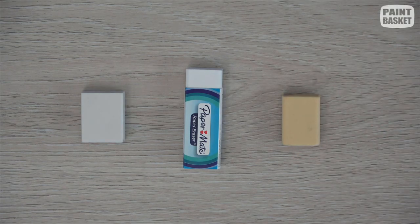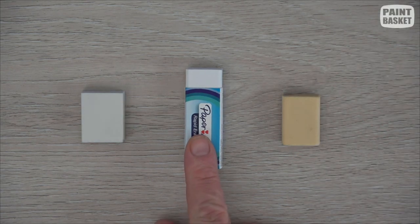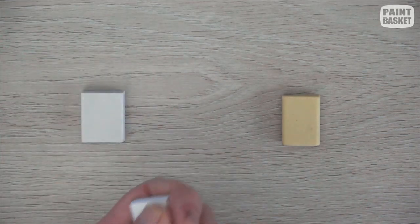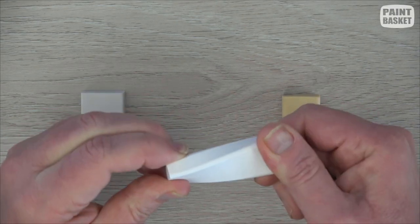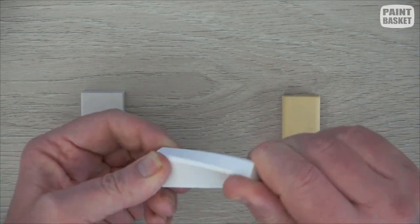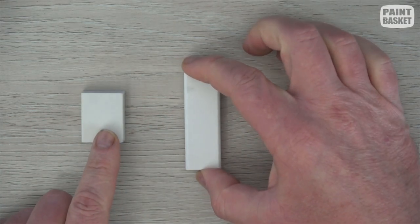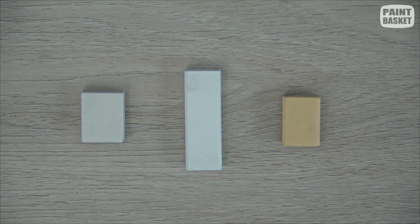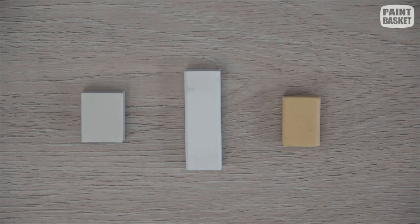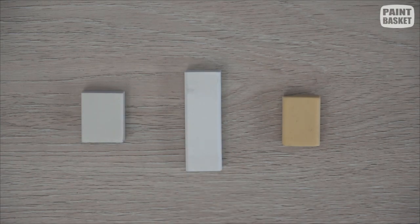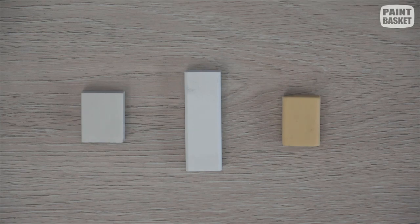Then next up, they started using vinyl to make the erasers. So these ones are even more flexible than the rubber eraser, but not quite as soft as the gum eraser. Nowadays, 90% of the erasers you're going to get are vinyl erasers. They just seem to have the most versatile consistency for erasing.